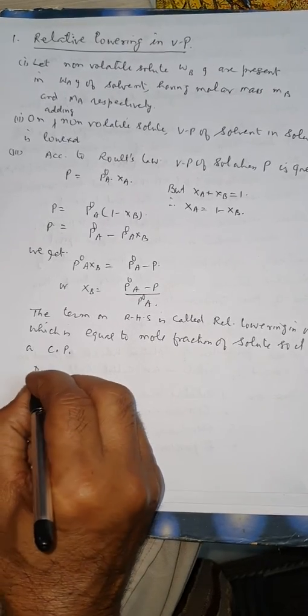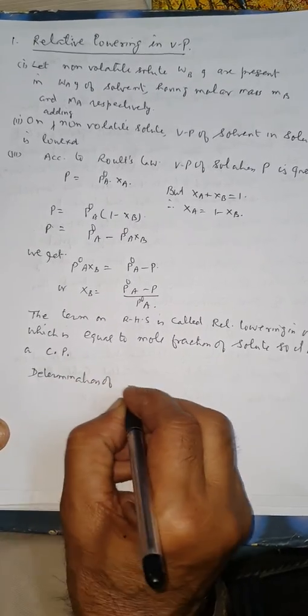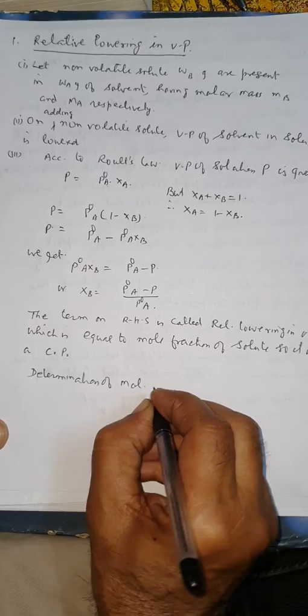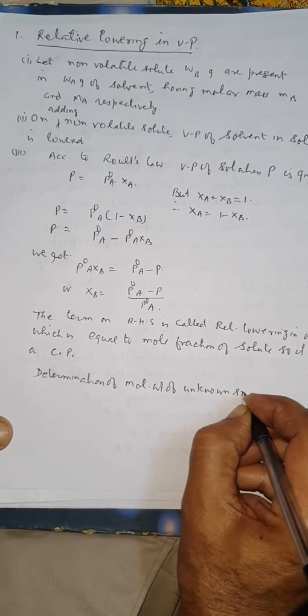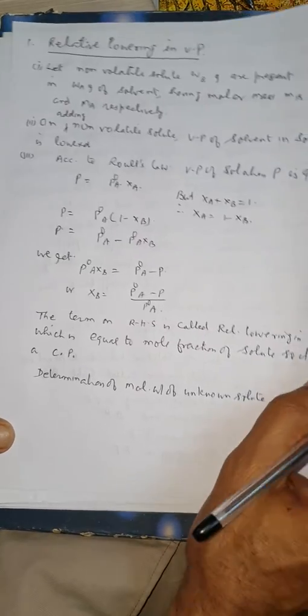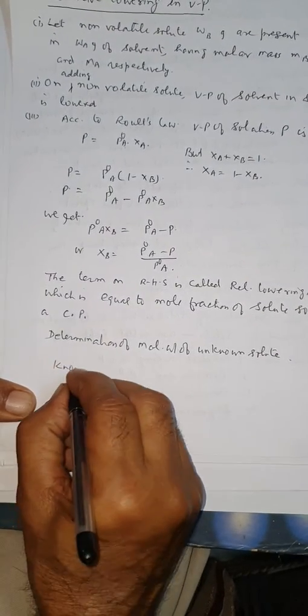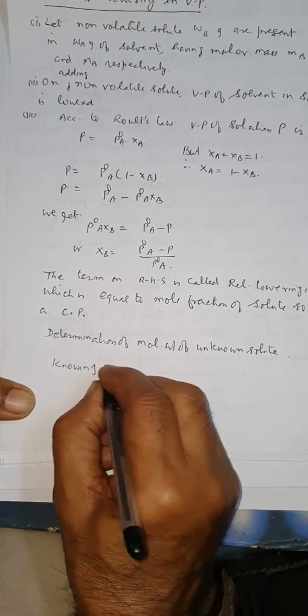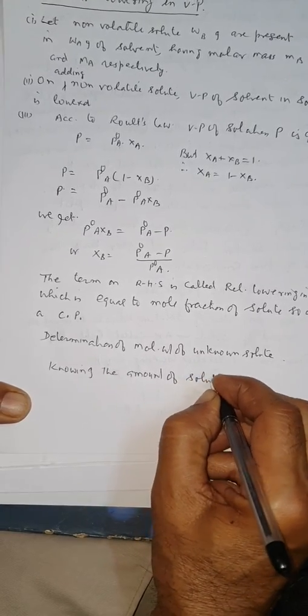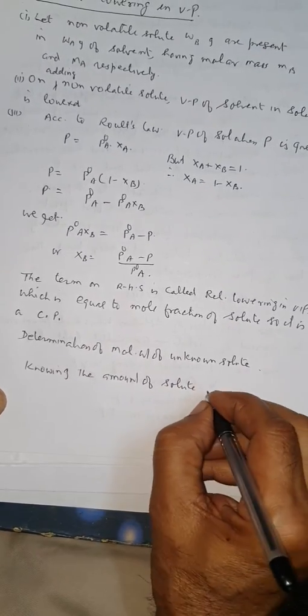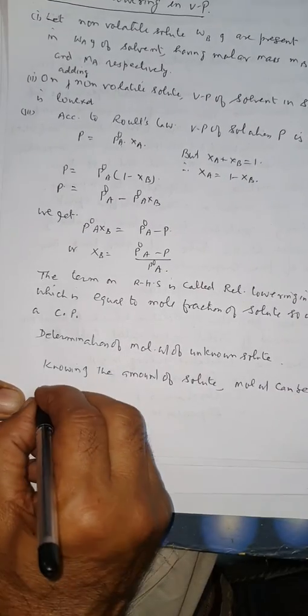The use of colligative property is determination of molecular mass, determination of molecular weight of unknown solute. Knowing the amount of solute, molecular weight can be found.